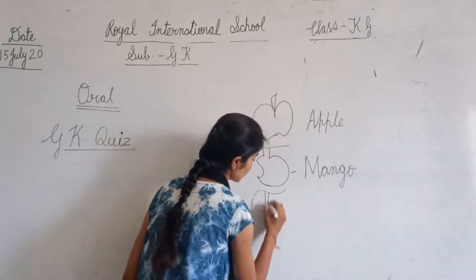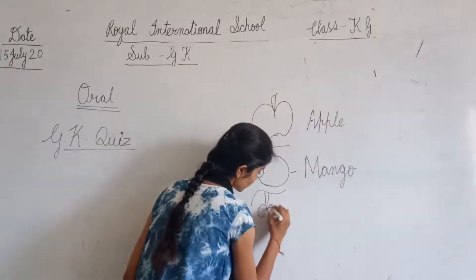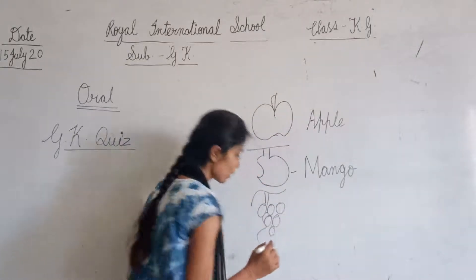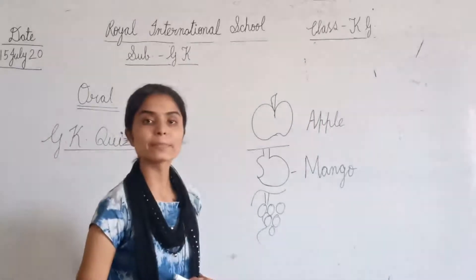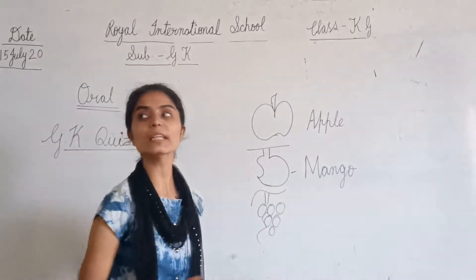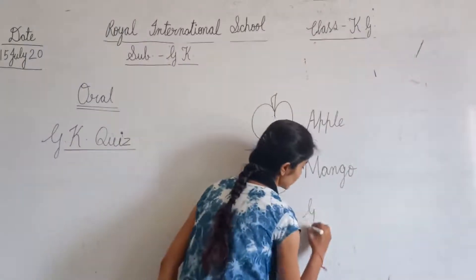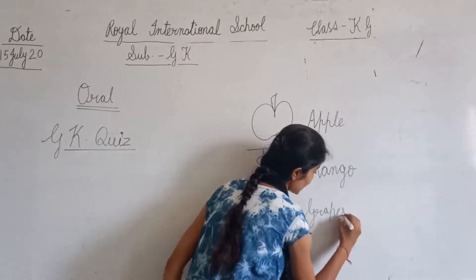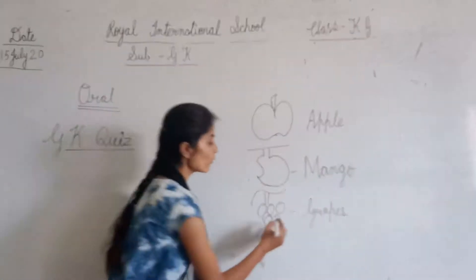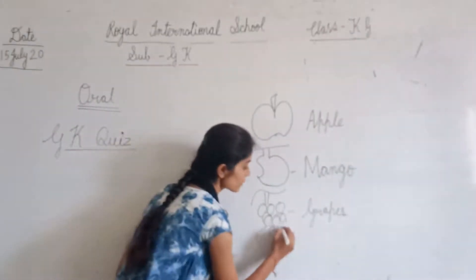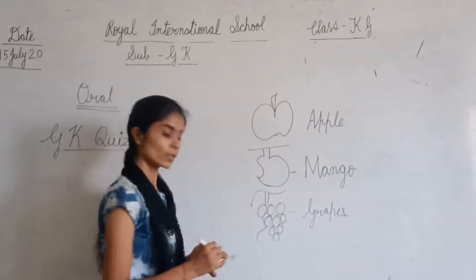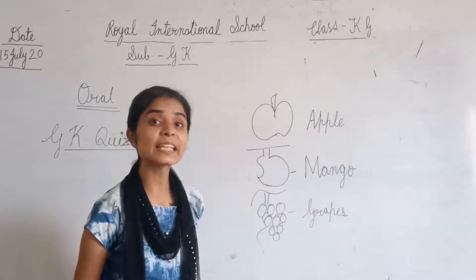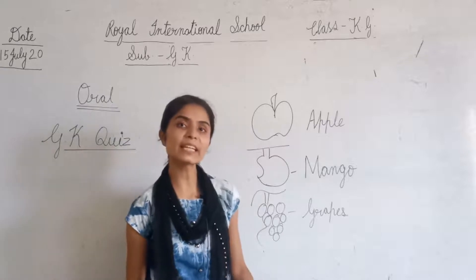Last picture: what is this? Grapes. What is this? Grapes. G-R-A-P-E-S. Grapes. Color of grapes? Tell me. Color of grapes? Green. Color of grapes? Green.